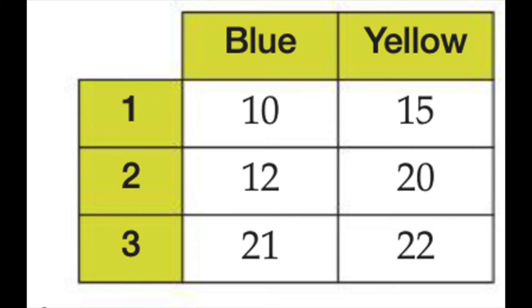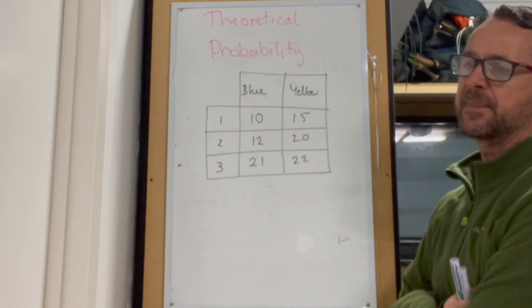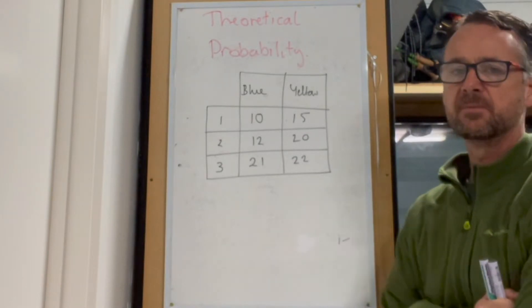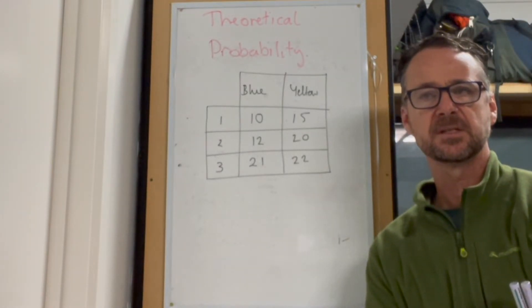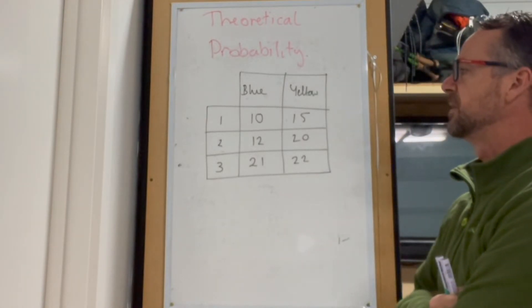All right, when we look at the idea of probability, this looks at the idea of what we would call theoretical probability. So that's just looking at the pure numbers that are in front of you and looking to try and create a probability of something occurring. It doesn't take into account any other factors that might occur as part of that process.